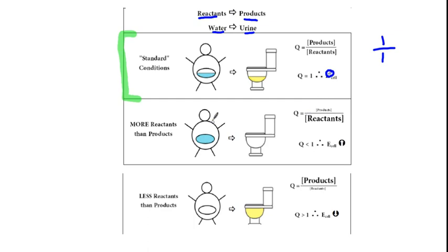Now I want you to think about what happens if you chug a bunch of water. If you chug a bunch of water, our reactant is going to be huge. That's in the denominator of our Q, our reaction quotient. And you haven't gone to the bathroom in a while, so your products are really, really tiny. What happens to your urgency or your need to pee?